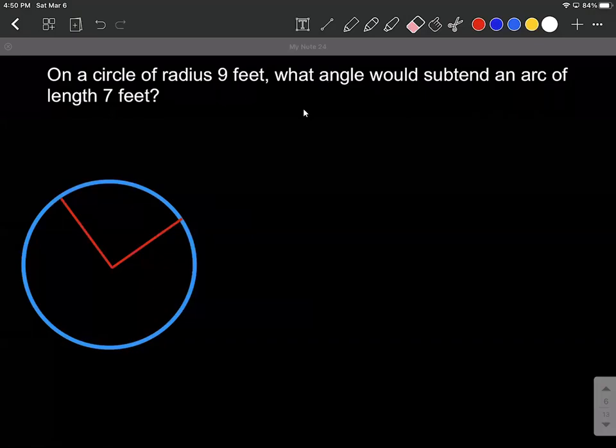Okay, on this example, we have a circle of radius nine feet, and we want to know what angle would subtend an arc of length seven feet.